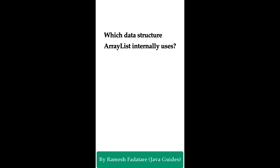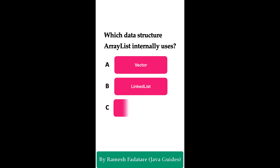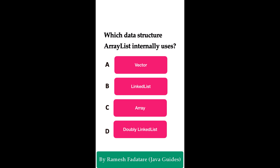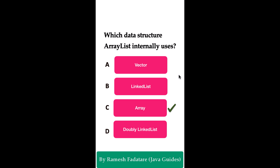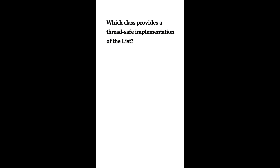Which data structure does ArrayList internally use? Option A: Vector. Option B: LinkedList. Option C: Array. Option D: doubly linked list. The correct answer is array. The ArrayList class internally uses a dynamic array to store its elements. As the ArrayList grows and the capacity of the underlying array is exceeded, ArrayList creates a new larger array and copies the old elements into the new array.